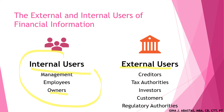The primary internal users of accounting information include management, employees, and owners. For management, the information needed includes income or earnings for the period, sales, available cash, and production costs. The decisions supported include analyzing the organization's performance and position, taking measures to improve results, assessing sufficiency of cash to pay dividends to stockholders, and making pricing decisions.